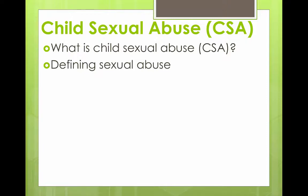The first component is determining whether the abusive behavior included physical contact. Typically we think of CSA as fondling or sexual intercourse, but non-contact circumstances can also be considered CSA — such as photographing a child and selling the pictures. There doesn't have to be contact for something to be defined as CSA. The next component is the intention of the perpetrator.